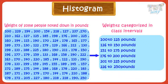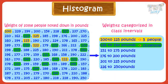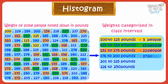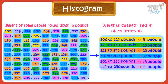Then we calculate how many people have weight in each class interval. For example, 5 people have weights in the range of 100 to 125 pounds, 15 people have weights in the range of 126 to 150 pounds, and so on. Now let's see how we write down this data in the form of a histogram.